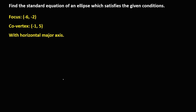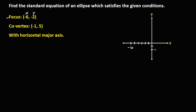Let's solve this problem: find the standard equation of an ellipse which satisfies the given conditions. First we need to graph this. From the given coordinate of the focus, x is negative 6 and y is negative 2, so that's the coordinate of the focus. For the given co-vertex, x is negative 1 and y is positive 5.